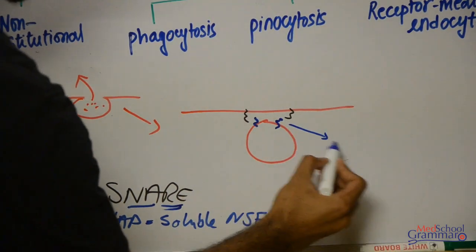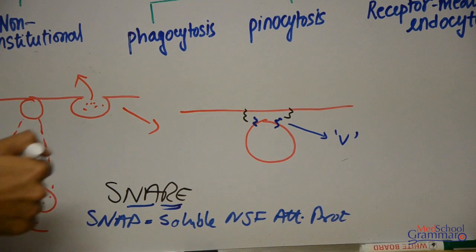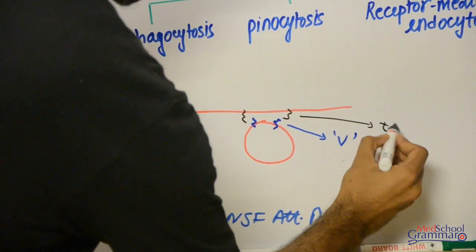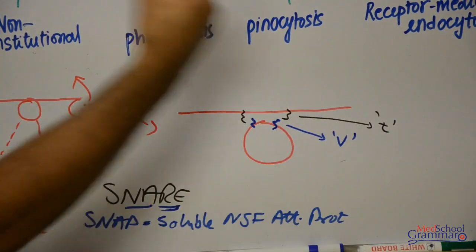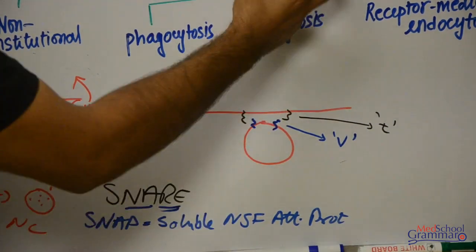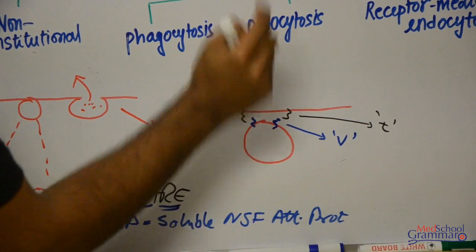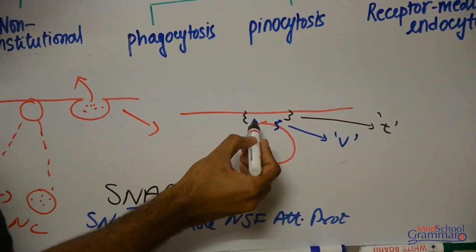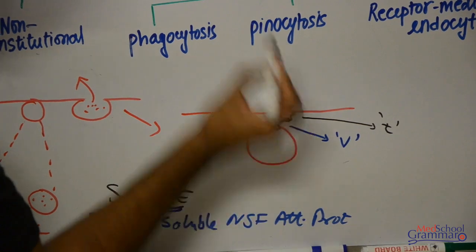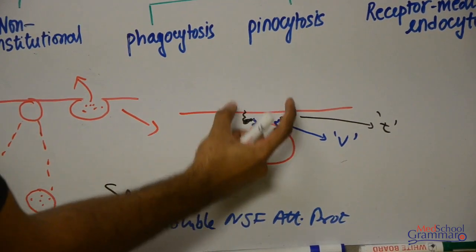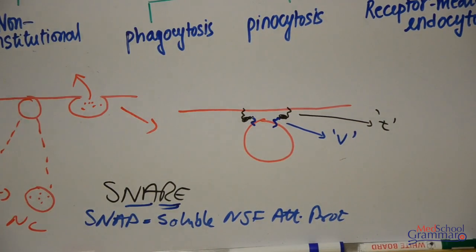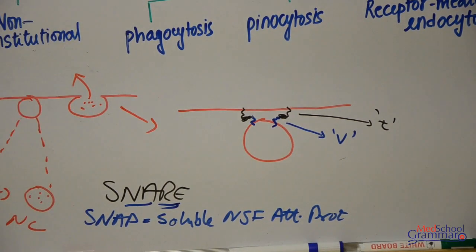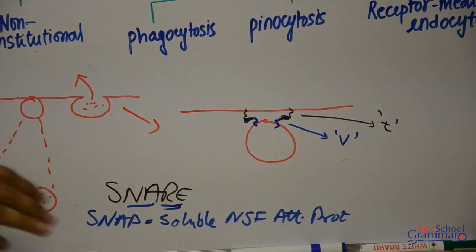The SNARE on the vesicle is known as v-SNARE (v for vesicle), and the SNARE on the plasma membrane is known as t-SNARE (t for target, since the plasma membrane is the vesicle's target). When the vesicle comes close to the plasma membrane, these two SNARE proteins wind around each other and attach, enabling proper docking of the vesicle with the plasma membrane. Once docked, the membranes fuse and the contents move out.